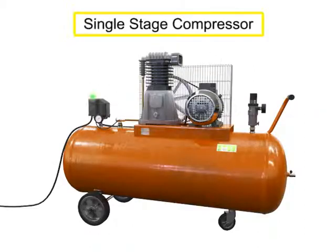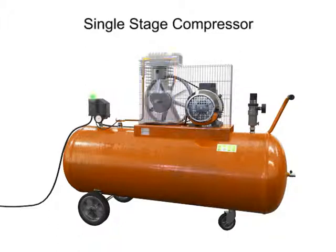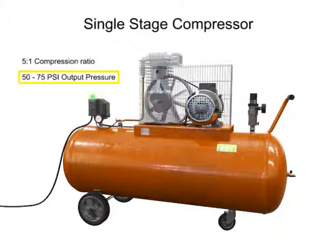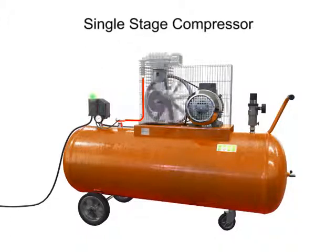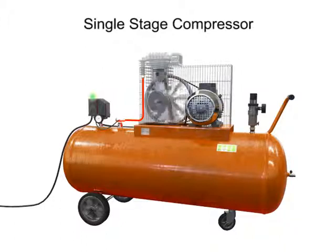This is a single stage compressor. It has only one piston and cylinder and compresses the air in only one stage. A single stage compressor typically has a compression ratio of 5 to 1 with an output pressure of about 50 to 75 PSI. As air is compressed, it becomes increasingly hot. If the air becomes too hot, not only is the compression cycle less efficient, but there is the hazard of an explosion if any hydrocarbon material, such as oil or lubricant, comes into contact with the overheated air.